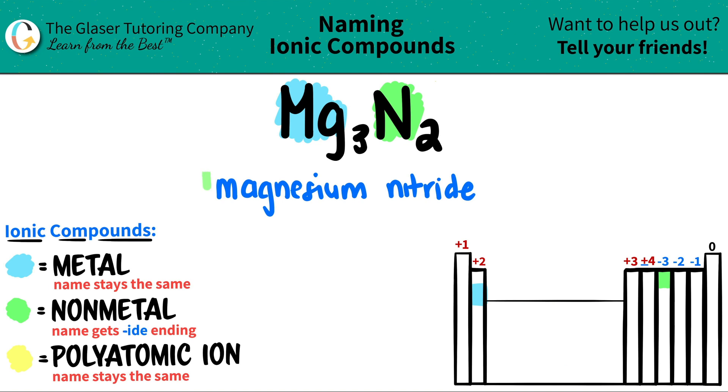So that's the end. This is your final answer: MG3N2 is just magnesium nitride.